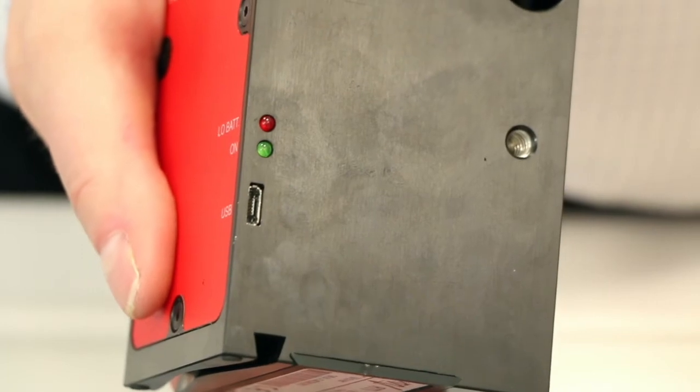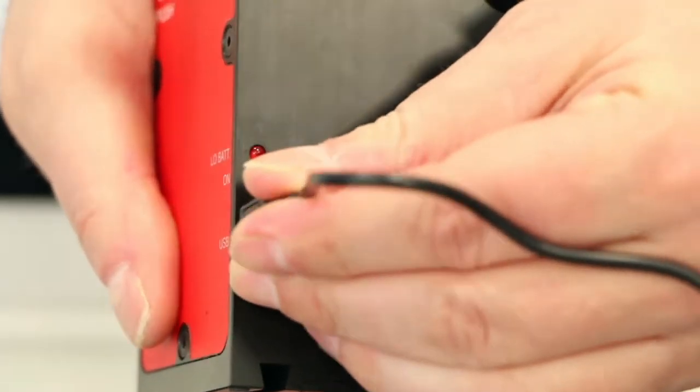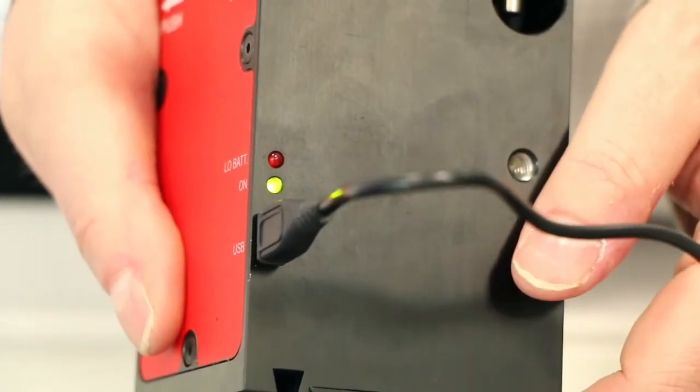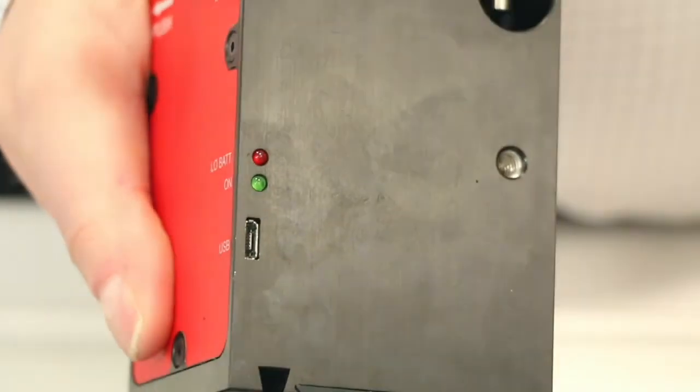Note that the mover doesn't have an on off switch. It powers on automatically when you connect it to a USB port. Therefore it is important to disconnect the mover after measurements. Otherwise the batteries in the mover will get drained.